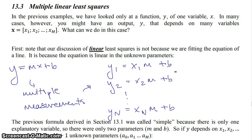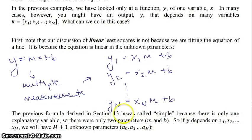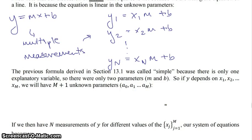And that arises because each one of these equations is linear with respect to m and b. Now the previous formula derived in section 13.1 was called simple because there's only one explanatory variable. And therefore there are only two parameters, m and b slope-intercept. But if y depends on x1, x2, dot dot dot, up to xm, we will have m plus 1 unknown parameters. Instead of 2, we have now m plus 1. We have a0, a1, dot dot dot, up to am.